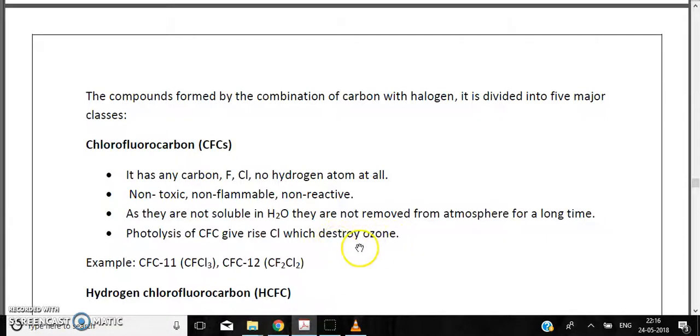Photolysis of chlorofluorocarbons gives rise to chlorine radicals which destroy ozone. So these chlorofluorocarbons are basically the source of chlorine radicals which destroy ozone, that's why they are very harmful for us. Examples of chlorofluorocarbons are CFC-11, which is CFCl3, and CFC-12, which is CF2Cl2, also called Freon or DuPont.